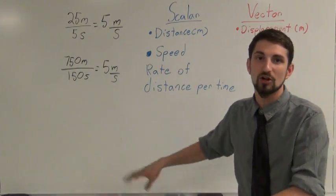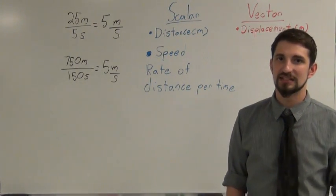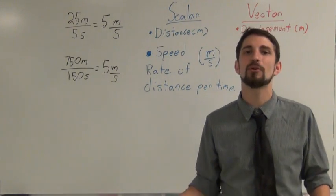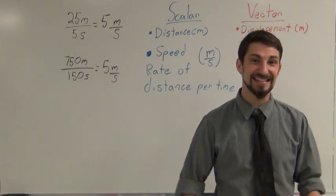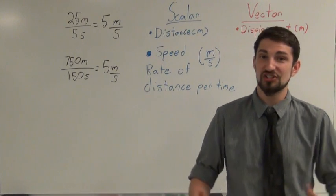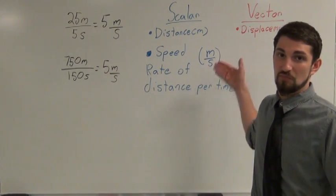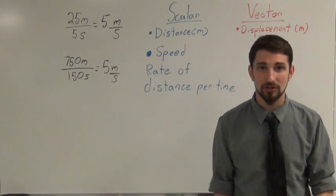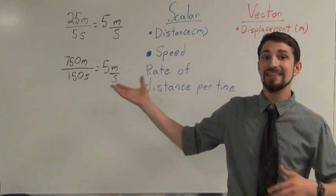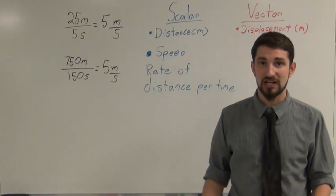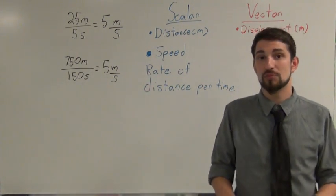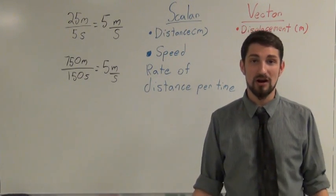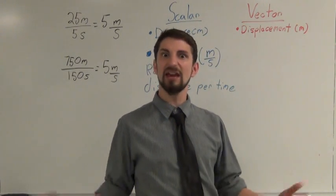The SI unit for speed is meters per second — it's distance per time. We already know distance is meters and time is seconds, so it makes sense. Speed is a scalar, meaning direction does not matter. In these problems we only know someone is moving 5 meters per second; we don't know if it's north, east, south, west, or any other direction.